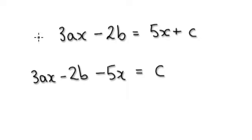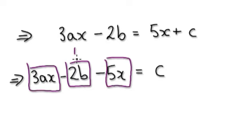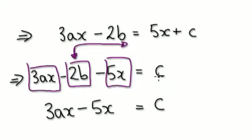So it would equal this. If you're here and you take away 5x, you get to this stage. So it would become this. Visualize it as this: you've got one block, take away this block, take away this block. This is classed as rubbish, so let's move this to the other side. Inside your mind, add 2b to both sides. So you would have: 3ax, take away 5x.